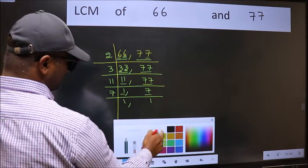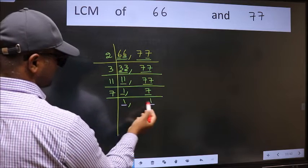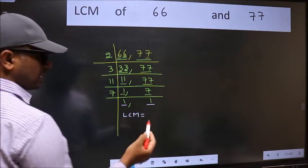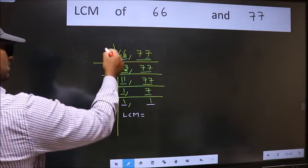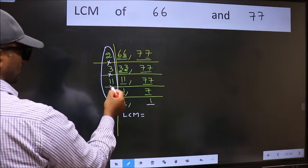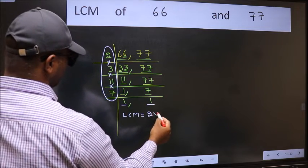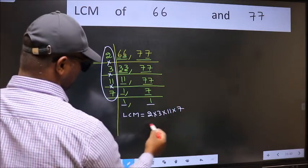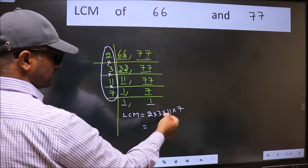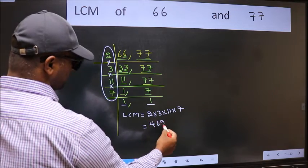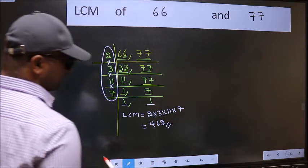We got 1 in both places, so our LCM is the product of these numbers: 2 times 3 times 11 times 7. When we multiply these numbers, we get 462 as our LCM.